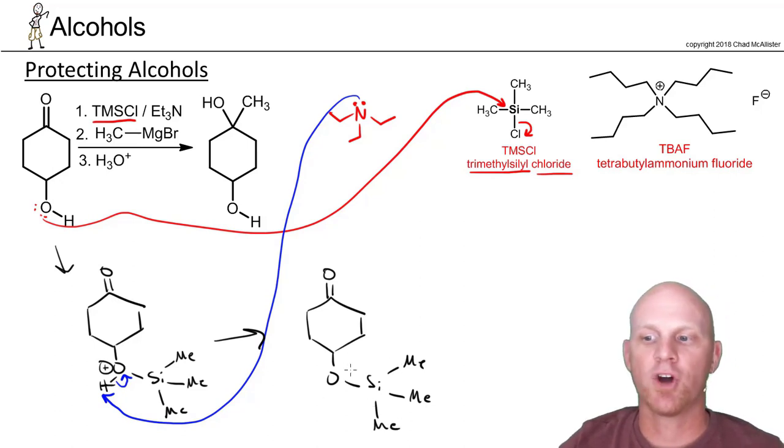And now we no longer have an OH, so our solution—in this case, this molecule—is not protic anymore, and I don't have a problem with it actually protonating a Grignard reagent and then destroying a Grignard reagent. The alcohol is now protected.